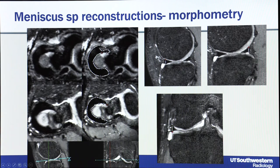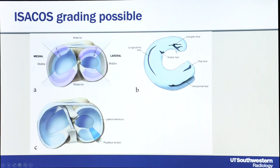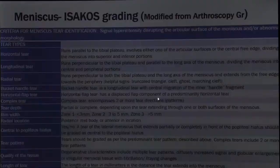We have done meniscus-specific reconstructions and measured normal menisci. The medial meniscus is larger than the lateral, and males or taller individuals have larger menisci. ISAKOS grading, developed for arthroscopy, is now possible with MRI. The zonal anatomy must be defined: outer zone is 1, intermediate is 2, inner zone is 3, with different meniscal portions involved in different tear types.